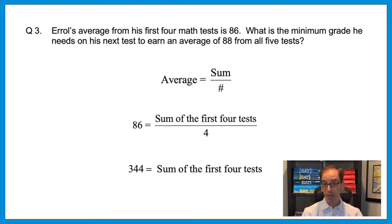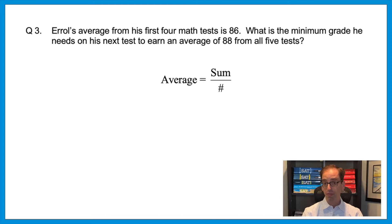And now we could use that on the next step. Now he's going to take a fifth test and we want him to have an average of 88. So go back to the formula. Average equals sum over the number of terms. Think about how that 344 can now be used in that formula. Press pause. Give it a shot.